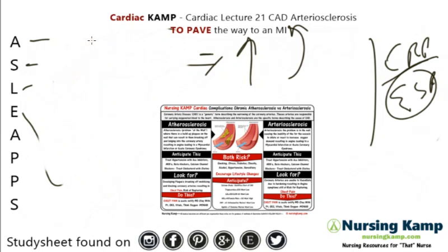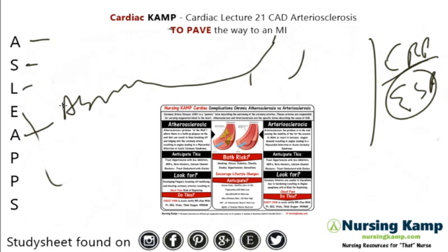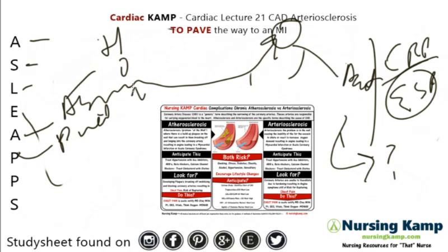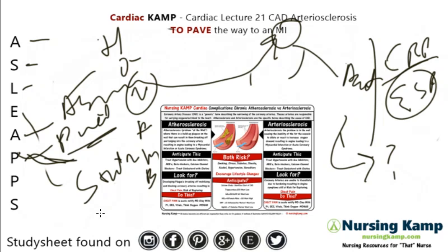The assessment is that patients are generally asymptomatic until they have chest pain, at which point it's acute and they need to be evaluated. For prescriptions, we try diet modifications first. If they're having chest pain, we do HONA-MB: nitro, oxygen, aspirin, morphine, and beta blockers. They might also start on statins or other antilipidemic medications to lower cholesterol.